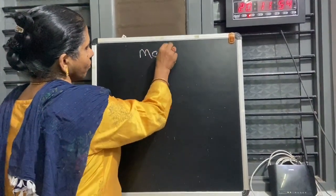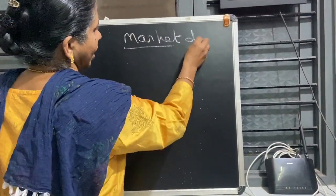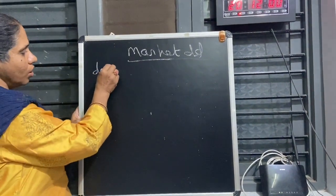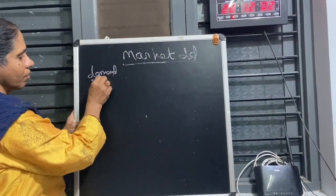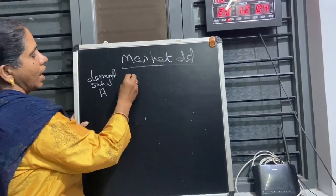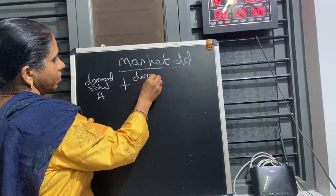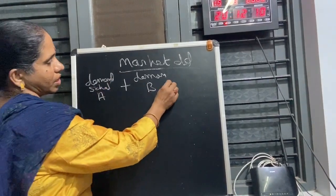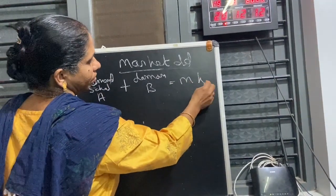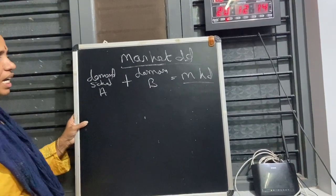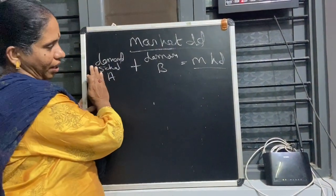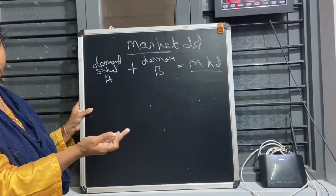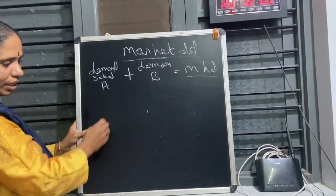So market demand — we need not confuse ourselves. What is market demand? Demand schedule of A plus demand schedule of B, where A is one consumer and B is another consumer, equals market demand. We are adding them horizontally — that is called horizontal summation. We will do the schedule and the diagram also.